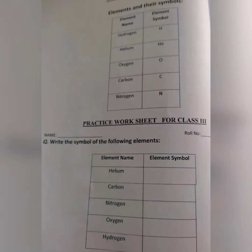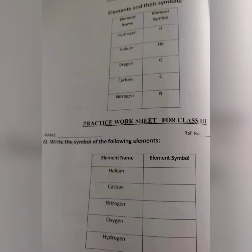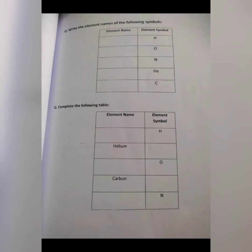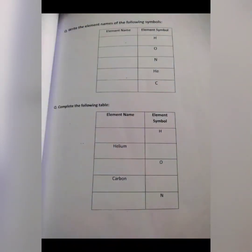Now come to the practice worksheet. You have to learn both the element names and their symbols. Write the symbols of the following elements. Now come to the next page, page number 9. Question 2 is: write the element names of the following symbols. You have to write the element names for the symbols given.